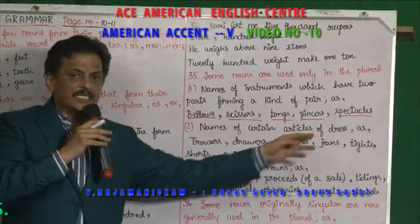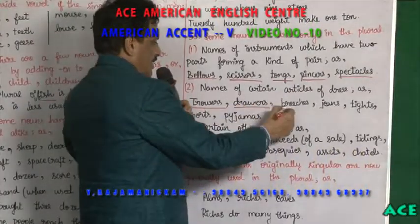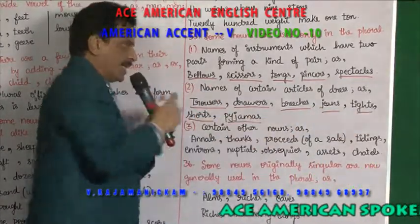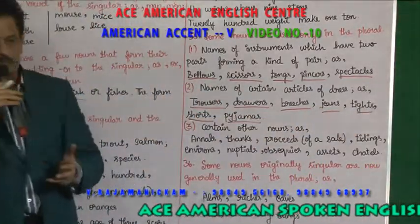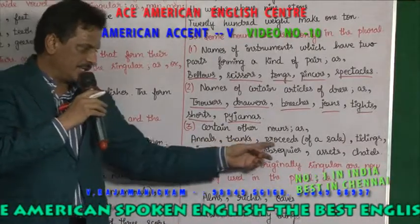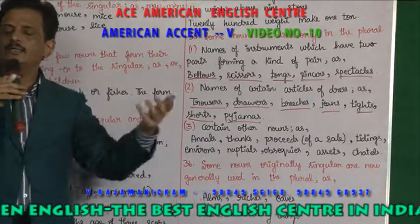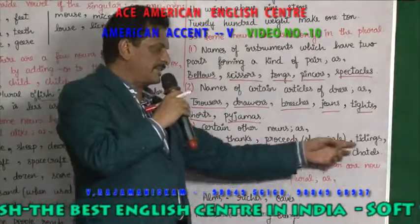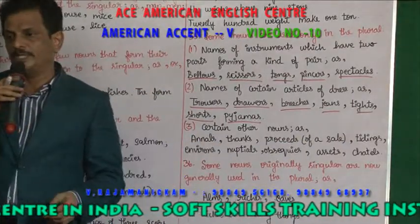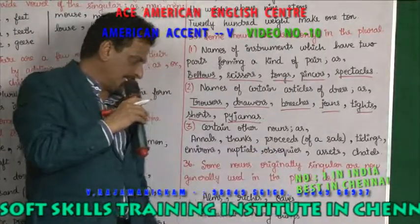Names of certain articles of dress used only in plural: trousers, drawers, breeches, jeans, tights, shorts, pyjamas. Certain other nouns like annals, thanks, proceeds of a sale — which means the amount you get after selling — tidings, environs, nuptials regarding marriage, obsequies, assets, chattels are also used only in plural.